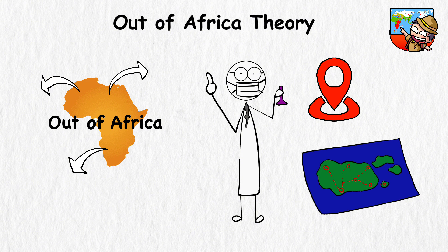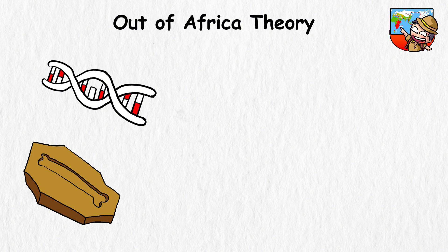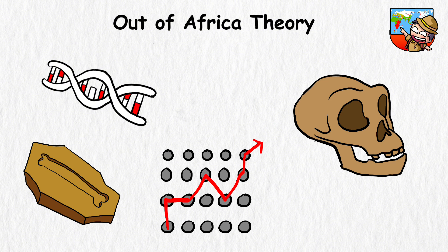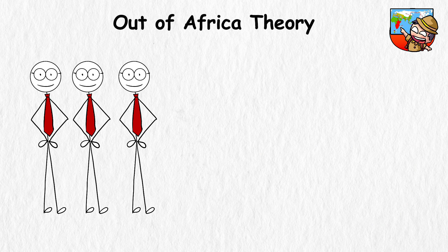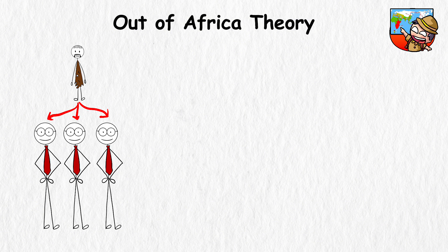Science even supports this theory with evidence. For instance, when you look at ancient fossils and modern human DNA, you'll notice a pattern. The oldest fossils of Homo sapiens are found in Africa, and genetic studies show that modern humans from all over the world have common ancestors that trace back to African roots.